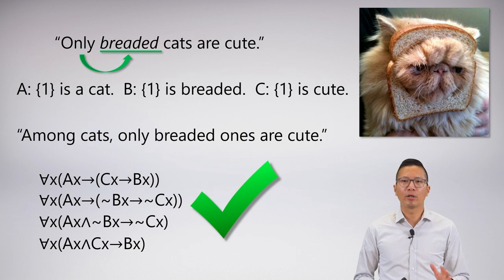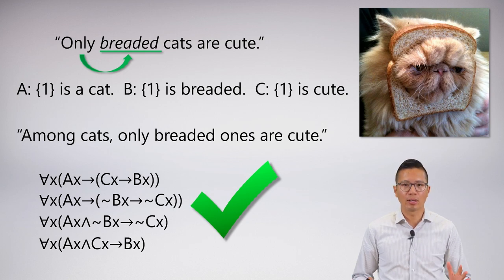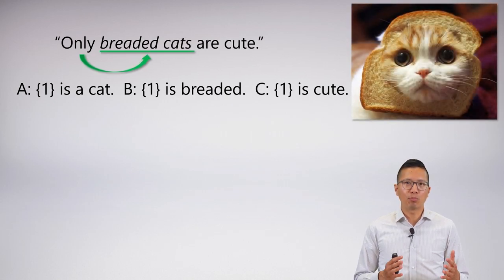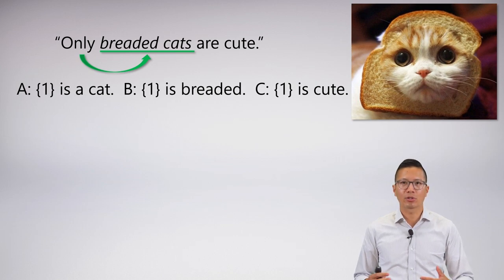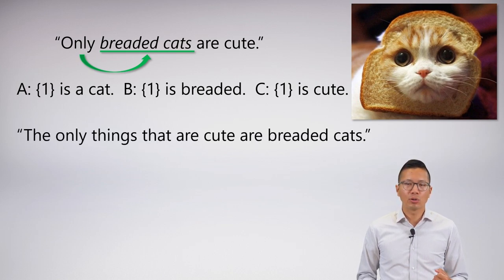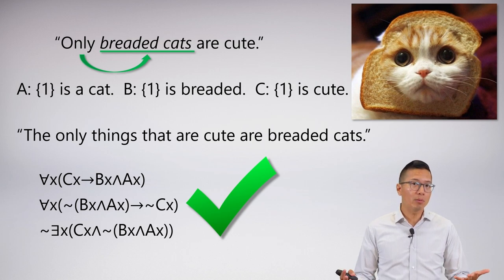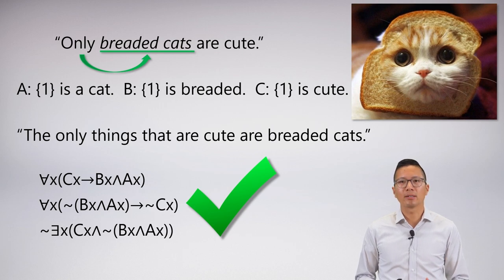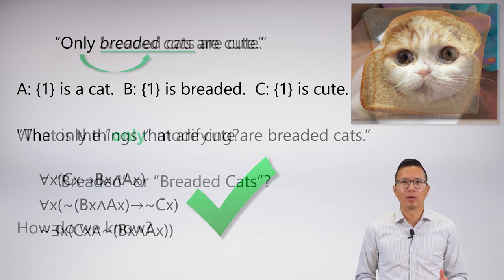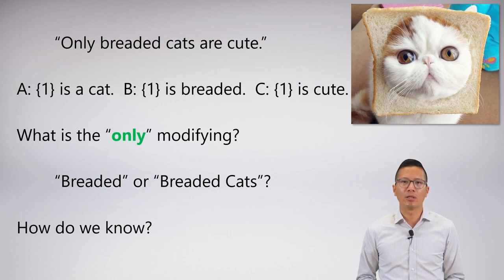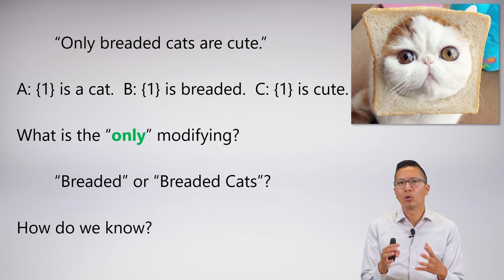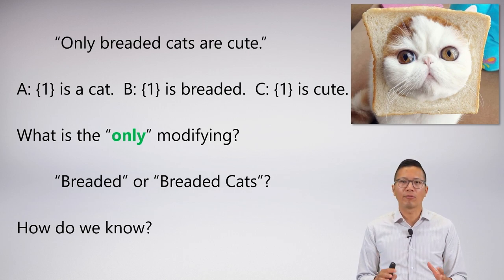There are lots of variants — they're all fine as long as we capture that 'breaded' is what is modified by 'only'. Now, another example is where 'breaded cats' is what's modified by 'only'. This says the only things that are cute are breaded cats — just like the dog example. If you're cute, then you are a breaded cat. So are dogs cute? No. Dogs are not breaded cats, so they're not cute. What we're having here is an ambiguity with 'only' in terms of what it's modifying — is it modifying the full complex group, or just the property of the group? Is it 'breaded' or 'breaded cats'?